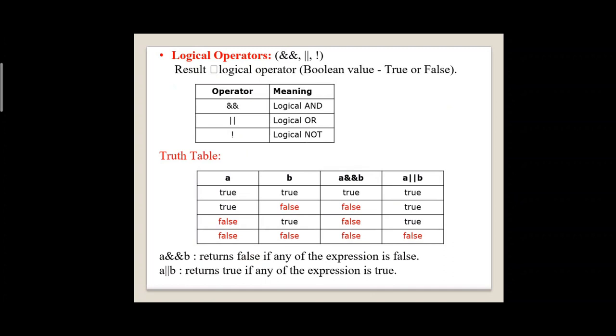The truth table for logical operators: take two conditions A and B. If both conditions are true, the logical AND result is true and the logical OR result is also true. If any one condition is false, the logical AND result is false but the logical OR result is true. If both conditions are false, both logical AND and logical OR results are false.